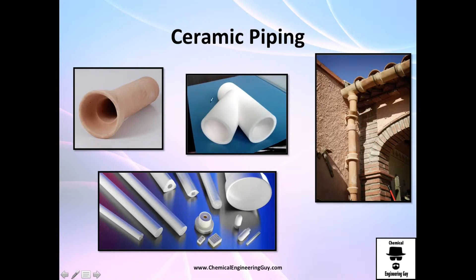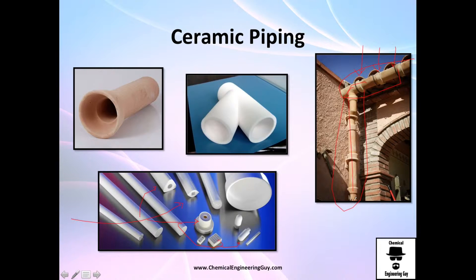As mentioned, ceramic piping includes many state-of-the-art types depending on the application. For example, this old house has a ceramic piping system — it goes here, then right here, and away. It does the job: transporting fluid from the roof out of the house to the street. That covers the materials overview.